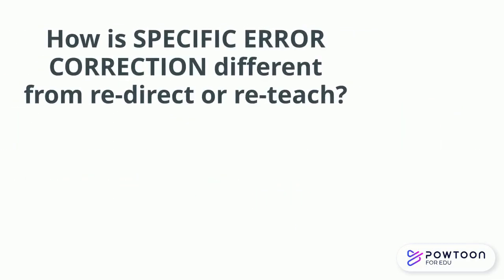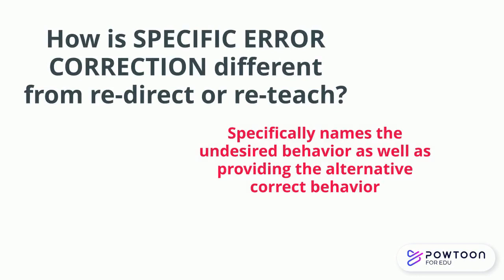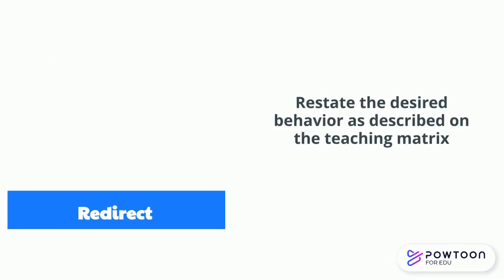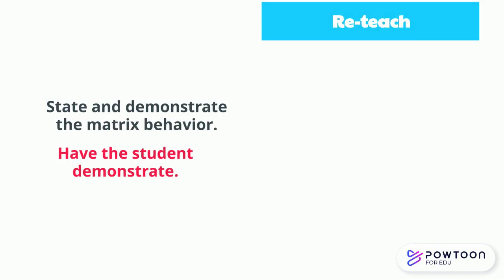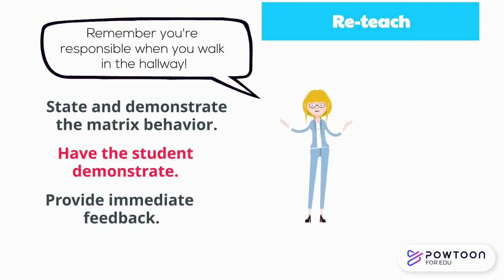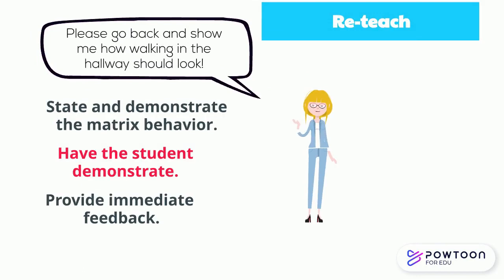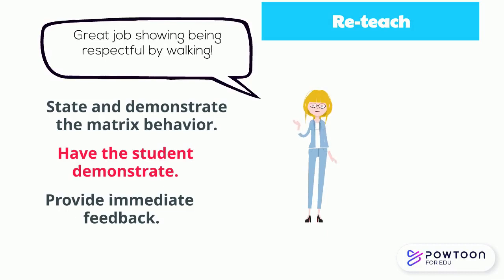How is specific error correction different from redirection or reteaching? You're specifically naming the undesired behavior as well as providing the alternative correct behavior. When you redirect, you're simply restating the desired behavior as described on the teaching matrix. When you reteach, you are stating the expected behavior and demonstrating it, and then having the student demonstrate it immediately, and then providing feedback on their performance.